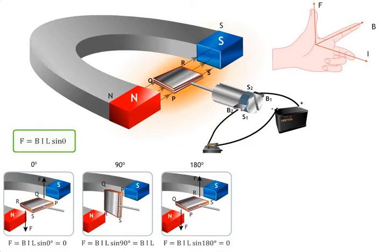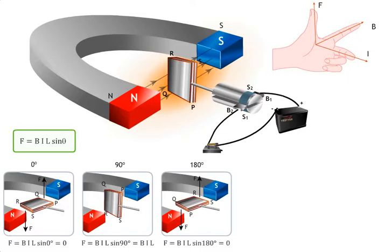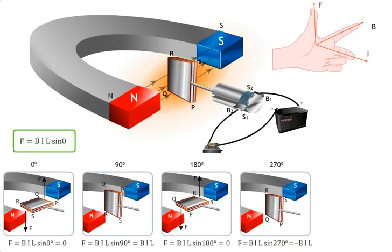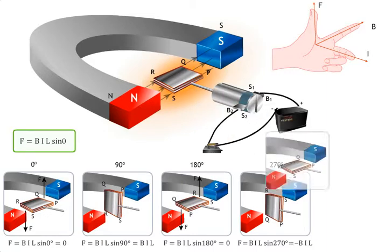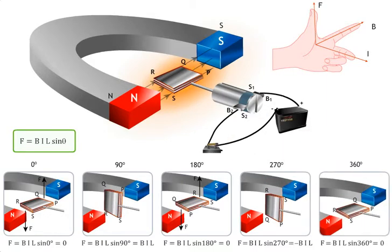The current now enters the coil through S2, passes along S, R, Q, P and leaves the coil through S1. The torque acting on the coil causes PQ to go down and RS to go up. The torque acts on the coil until it rotates through 90 degrees. Further, it rotates through another 90 degrees due to inertia and becomes horizontal again.